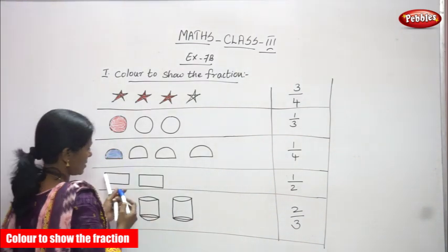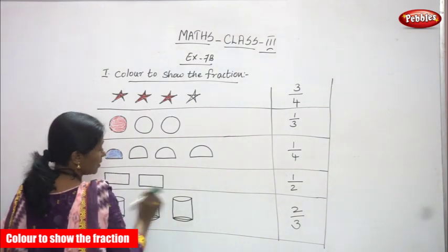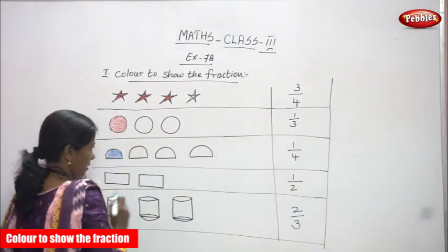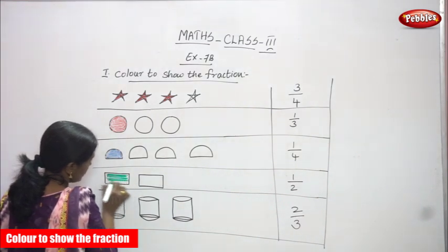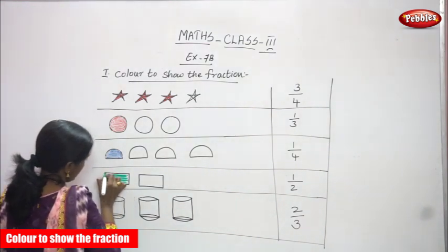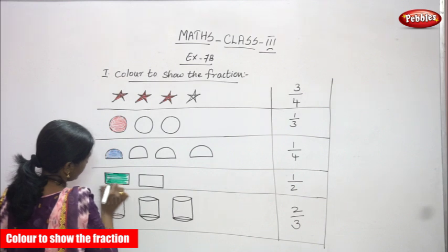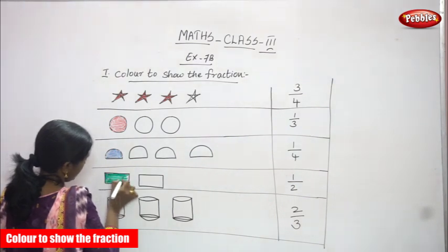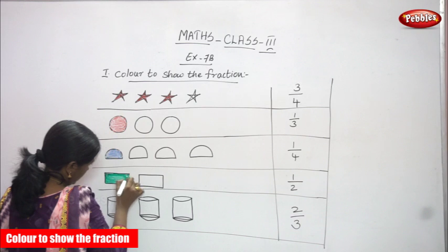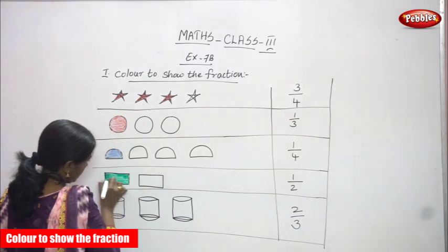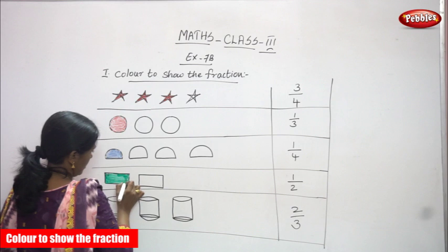Next, one by two — that is how many rectangles? Two rectangles. I have to shade only one. Okay, only one rectangle.